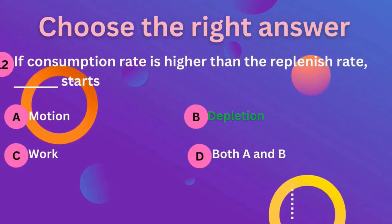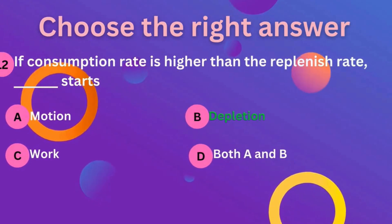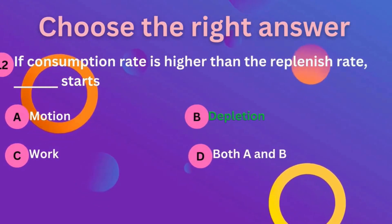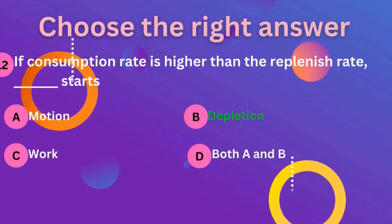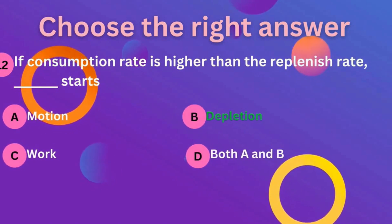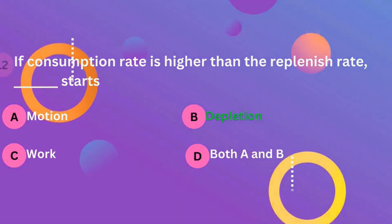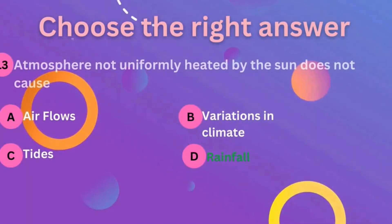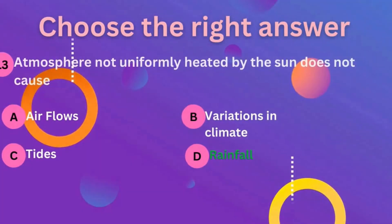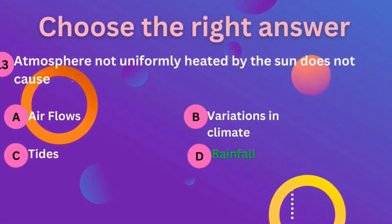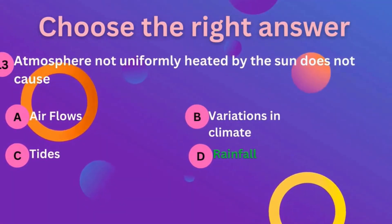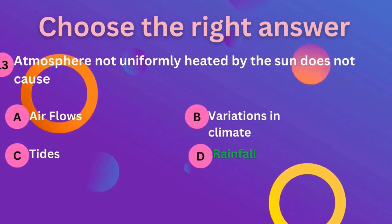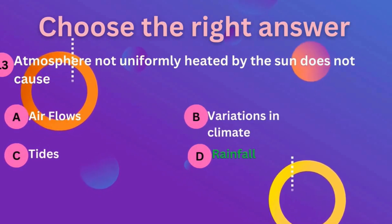Question number 12: if consumption rate is higher than the depletion rate, depletion starts. Question 13: atmosphere not uniformly heated by the sun does not cause rainfall. D is the correct answer.